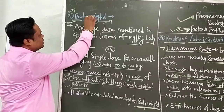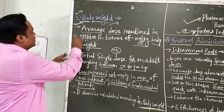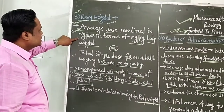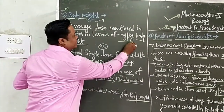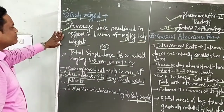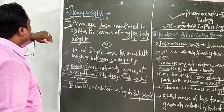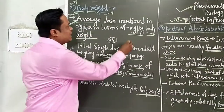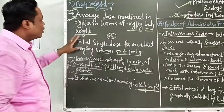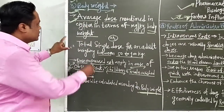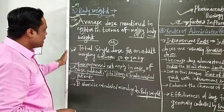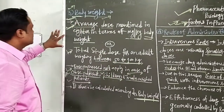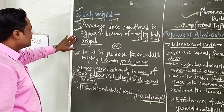Body weight is important while calculating the dose of a drug. The average dose mentioned in the pharmacopoeia is expressed in terms of mg per kg of body weight. This is the standard — the dose of the drug is calculated according to the average dose expressed as mg per kg of body weight, or as a total single dose for an adult weighing between 50 to 100 kg. This is the standard while calculating the dose.